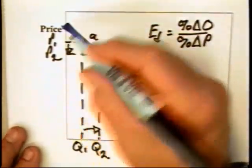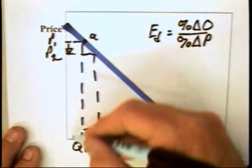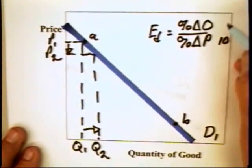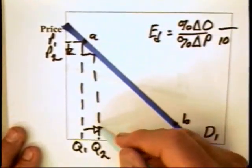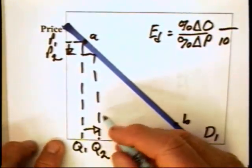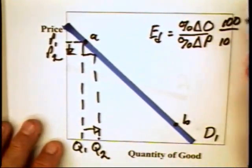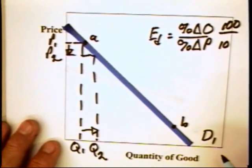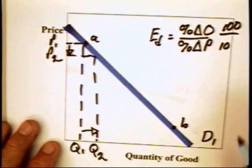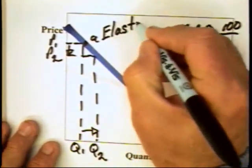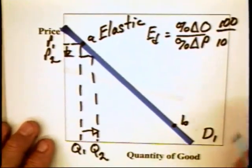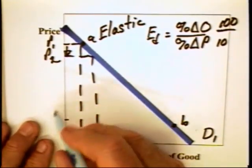Now here we have a reduction in the price, and I'm just eyeballing it. It looks to me about 10%. And we have an expansion in the quantity that looks to me about 100%, which means the coefficient is 10, which means it's greater than 1. And therefore, the demand in this range of the demand curve is elastic.